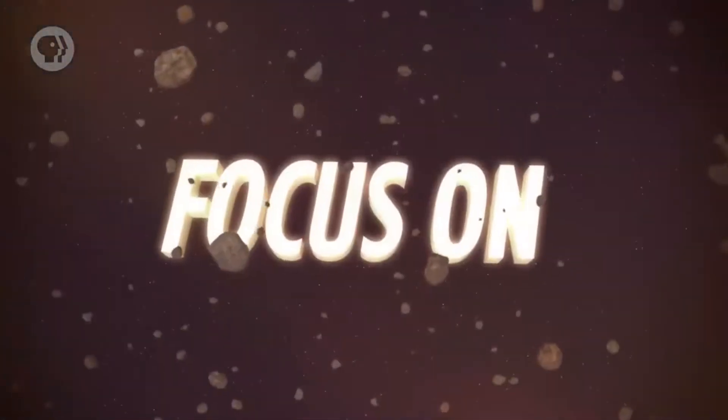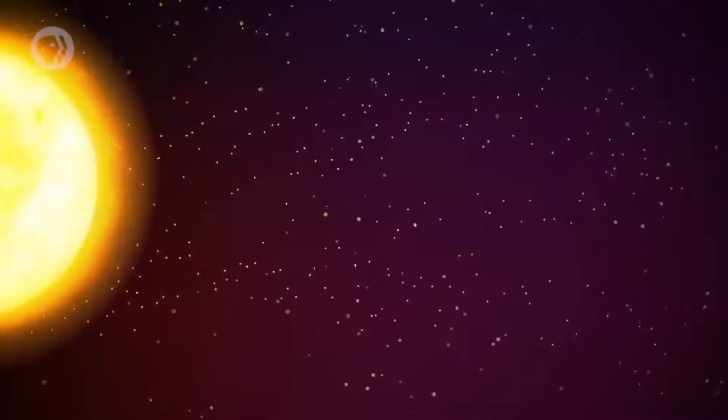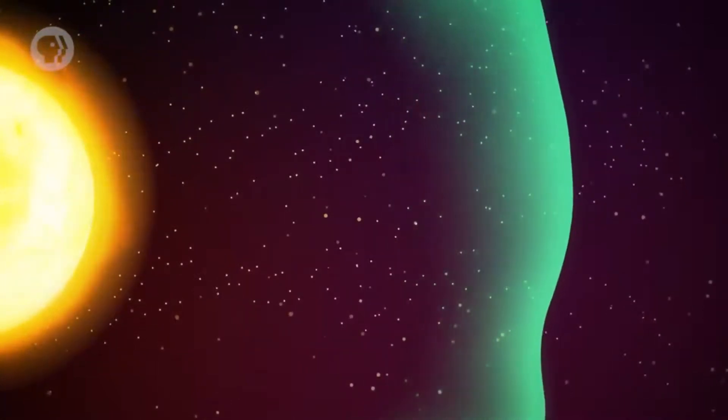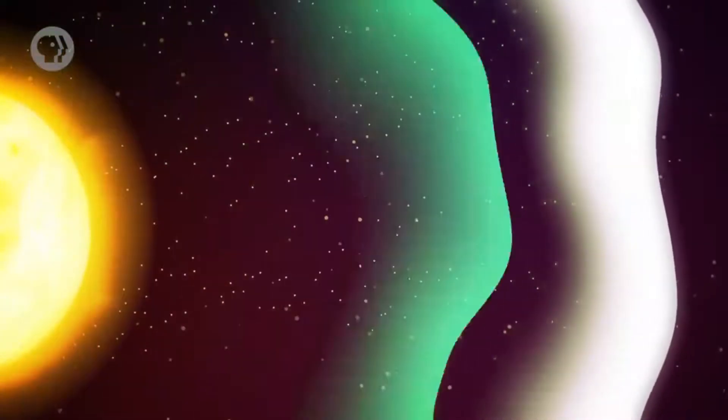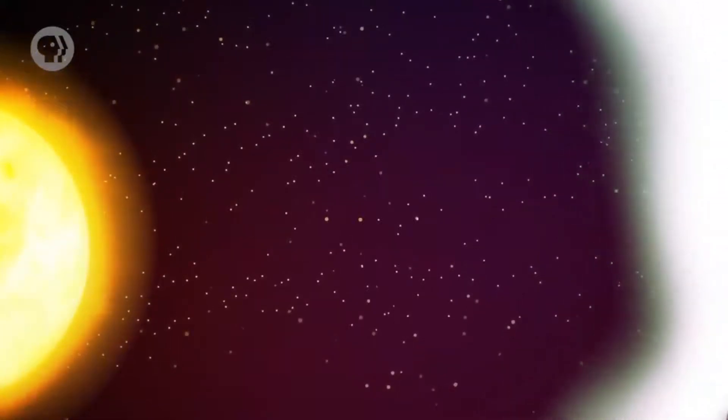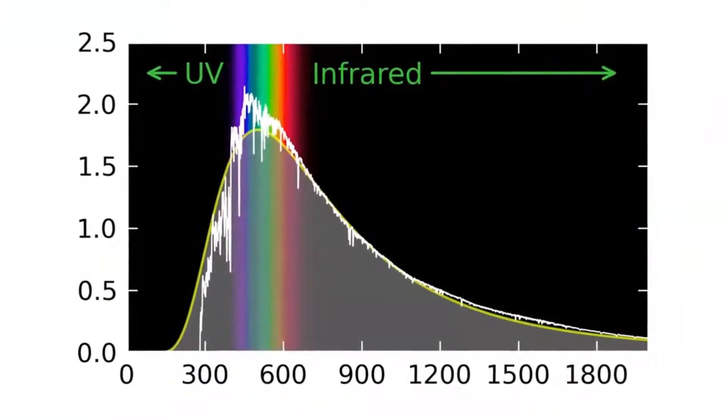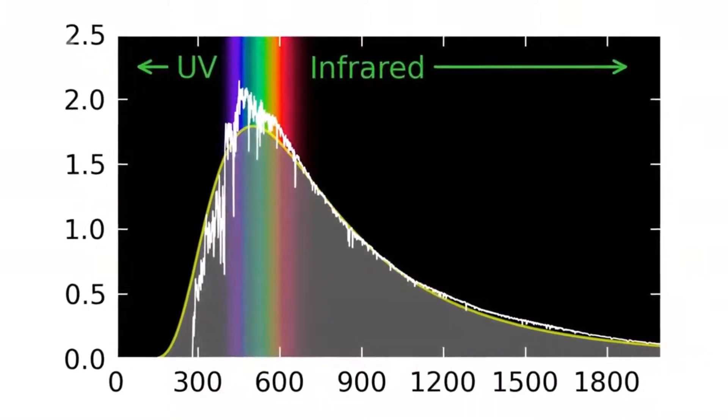Sirius, the brightest star in the night sky, is much hotter than the sun and is classified A0. Betelgeuse, which is red and cool, is M2. Hot stars are blue, cool stars red, with orange and yellow in between — but there are no green stars. A star can emit lots of green light but also emits red, blue, and orange, and our eyes mix them to form other colors. Interestingly, the sun's spectrum actually peaks in the green, but our eyes see all the mixed colors as white.